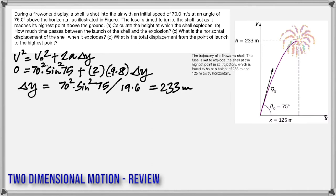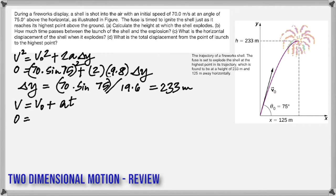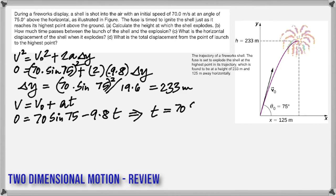In part B, how much time does it take to go from launch to maximum height? To find the time, here is the equation: the final velocity equals the initial plus a·t. The acceleration becomes negative because a is negative 9.8. Doing the math, you must get 70 sine 75 divided by 9.8, which is 6.90 seconds.